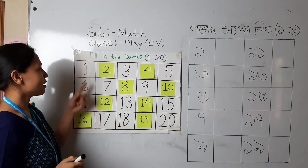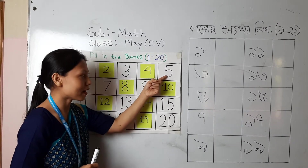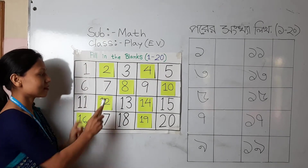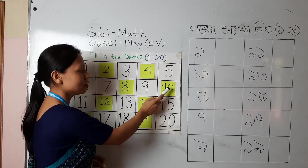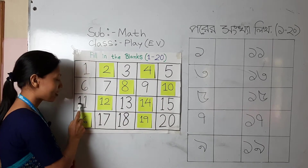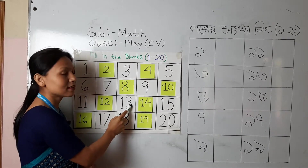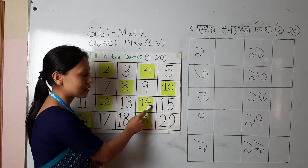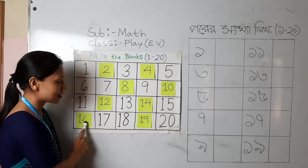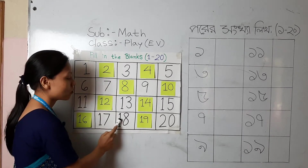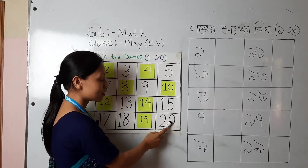Let's read it again: one, two, three, four, five, six, seven, eight, nine, ten — one, zero, ten. Then eleven — one, one. Twelve — one, two. Thirteen — one, three. Fourteen — one, four. Fifteen — one, five. Sixteen — one, six. Seventeen — one, seven. Eighteen — one, eight. Nineteen — one, nine. Then twenty — two, zero, twenty.